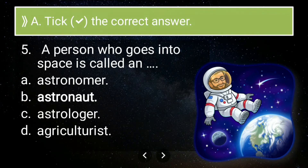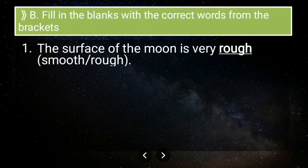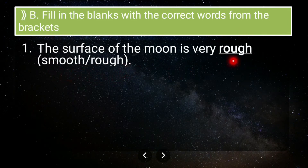Now for fill in the blanks. First question: the surface of the Moon is very — smooth or rough? The answer is rough. The Moon's surface is not smooth at all; there are a lot of craters on it. Craters are pits that have been formed by meteorites.